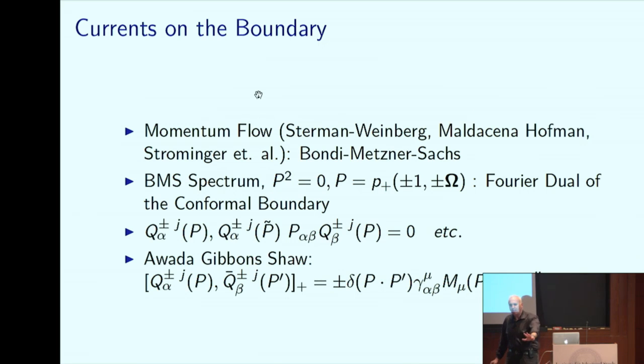Now, one quantum number that's always there is helicity. Massless particles carry helicity. Massive particles carry spin. A particle of fixed momentum will have some little Hilbert space that describes its possible spin or helicity states. And so, we have to have some operators that carry helicity. And we certainly have fermions in the real world. So, it's reasonable to think that those include the possibility of helicity one half.